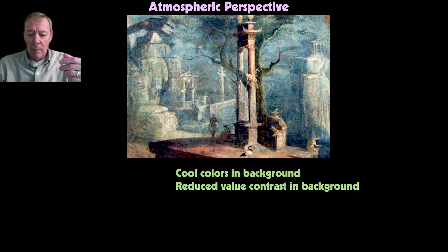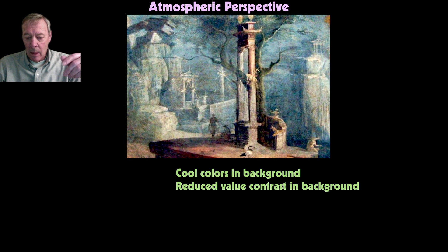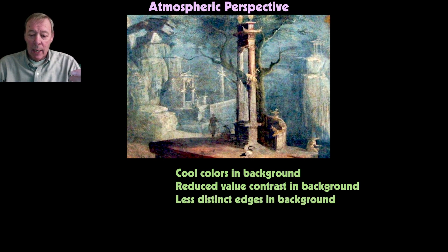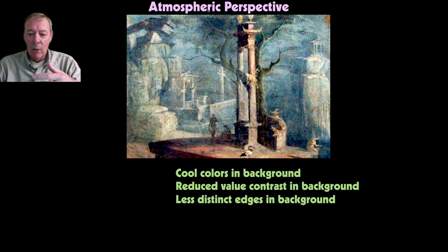A second element of atmospheric perspective is reduced value contrast in the background. In the foreground we see high values on the front and dark values on the side with sharp contrast between them, making surfaces look solid and defined. In the background, however, the contrast between lightest and darkest values is reduced, making things look blurrier or mistier. The third element is less distinct edges in the background: foreground edges between light and dark are sharp and crisp, while background edges are soft and blurred—all consequences of layers of atmosphere.